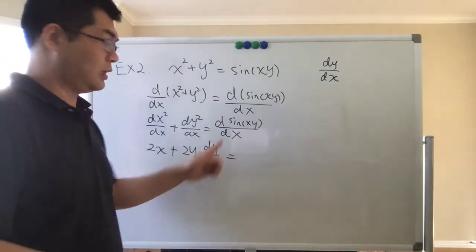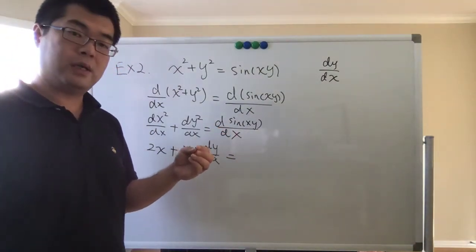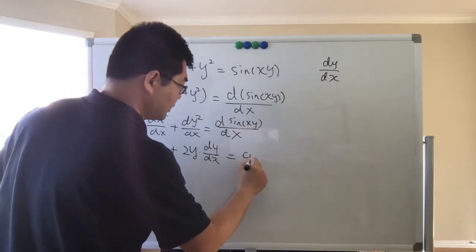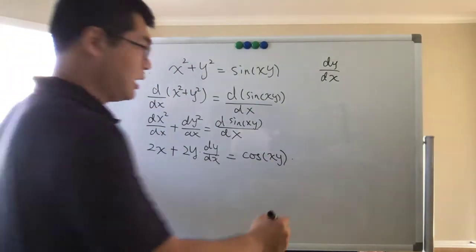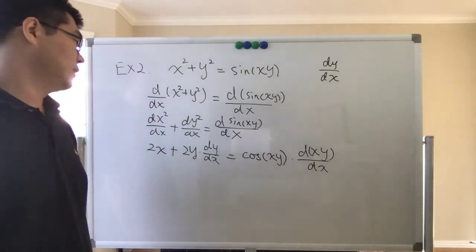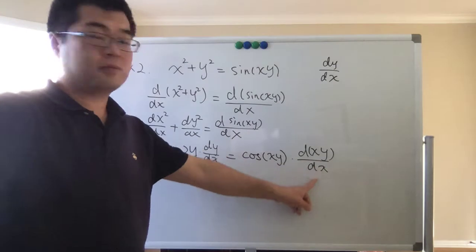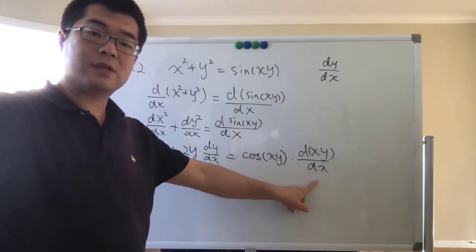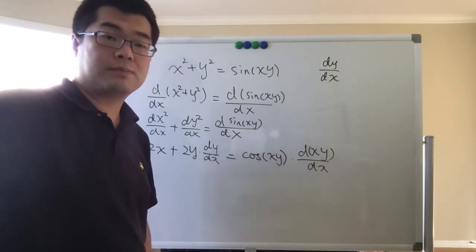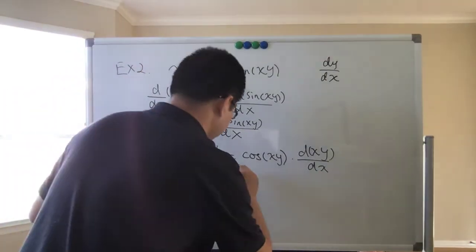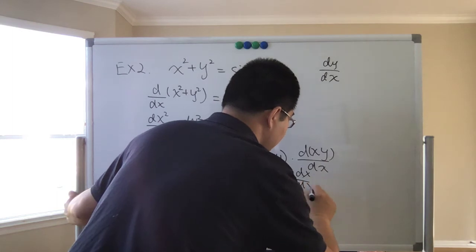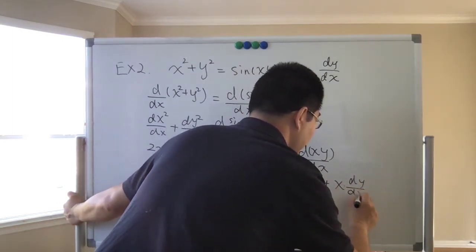On the right-hand side, we use the chain rule again. The outside function is sine, and the inside is xy, so it's cosine of xy times the derivative of the inside function with respect to x. To find d/dx of xy, we use the product rule — as discussed in the first part of section 3.7 — giving cosine of xy times (dx/dx · y plus x · dy/dx).